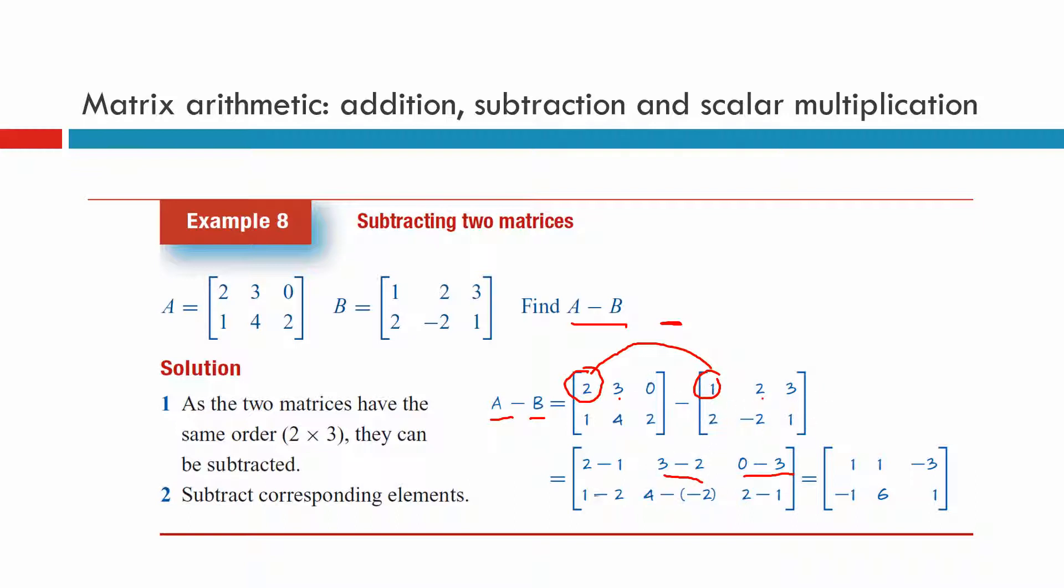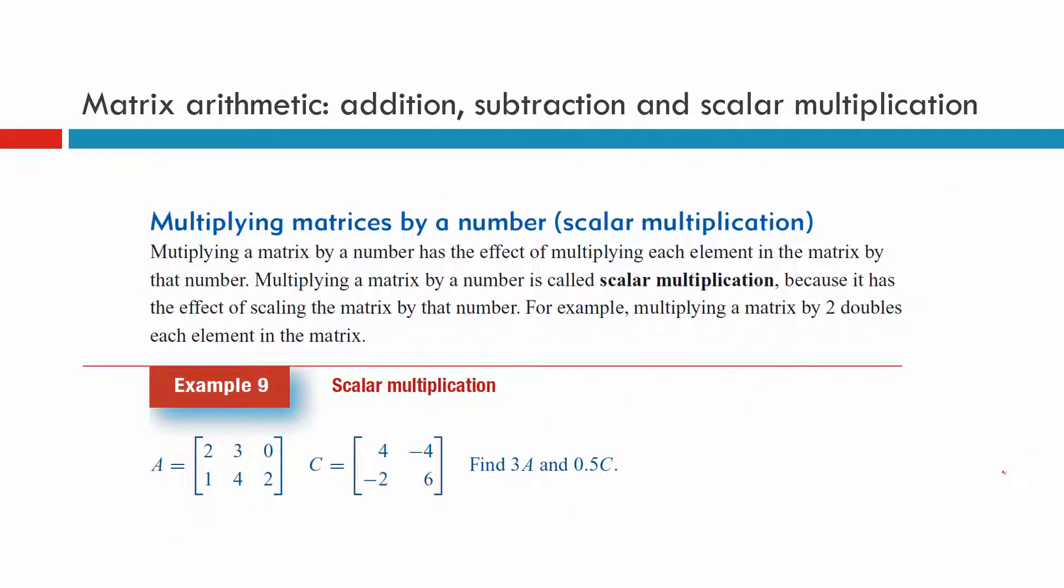And then in the second line, one minus the two. The four minus the negative two. And the two minus the one. When we do this, we get two minus one is one. Three minus two is one. Zero minus three is negative three. One minus two is negative one. Four minus negative two becomes four plus two. So we get six. And two minus one is one. So that's how we subtract matrices.